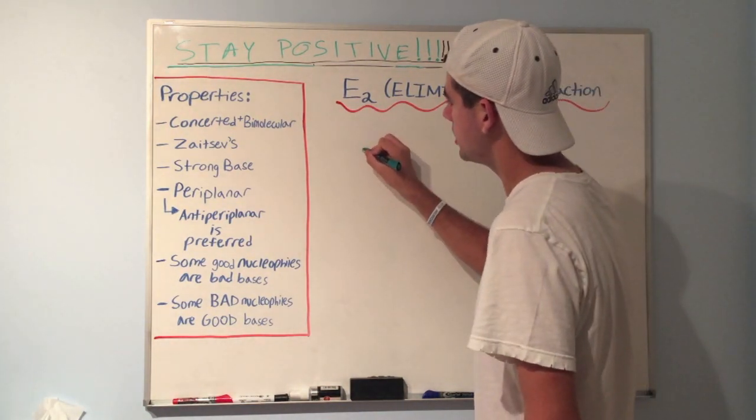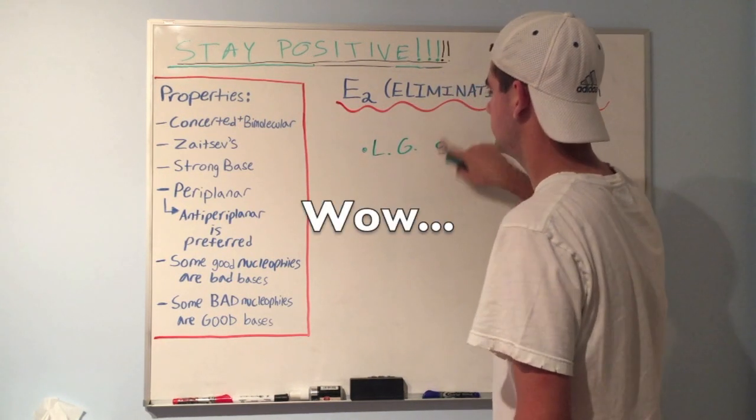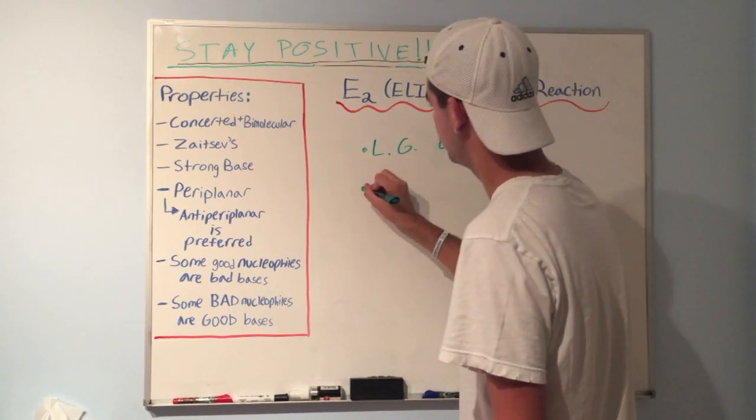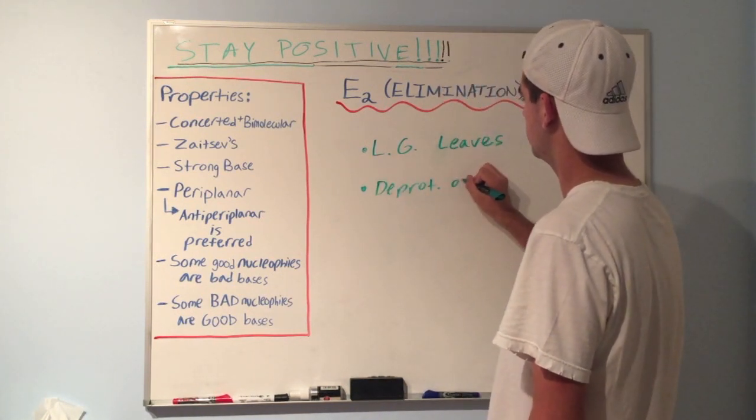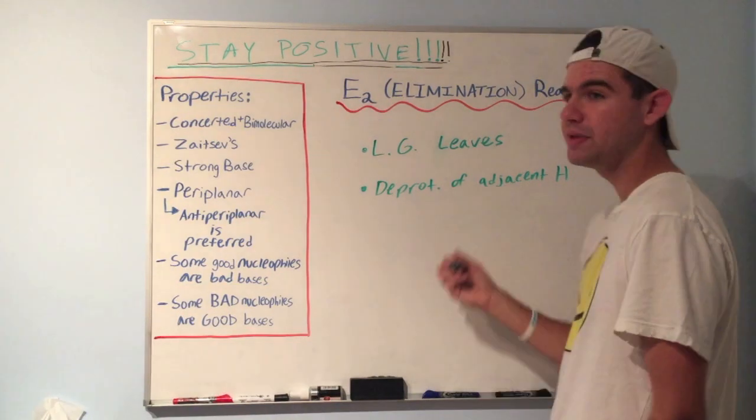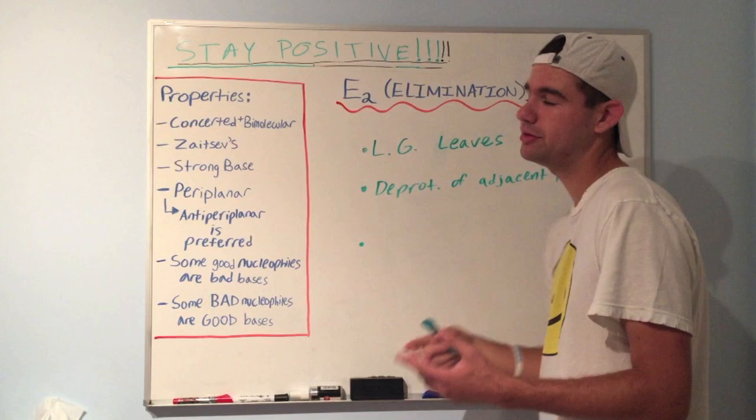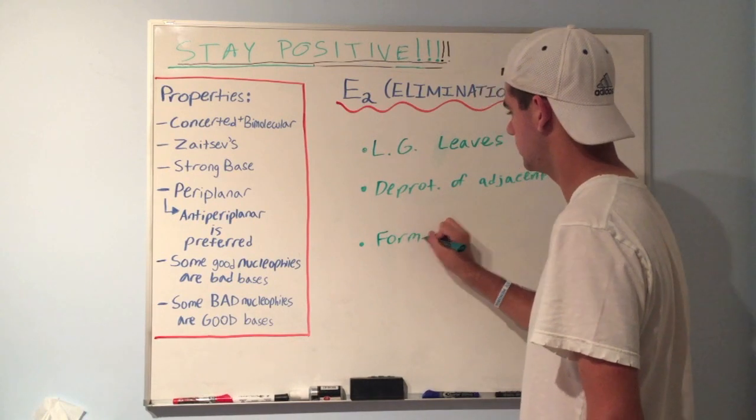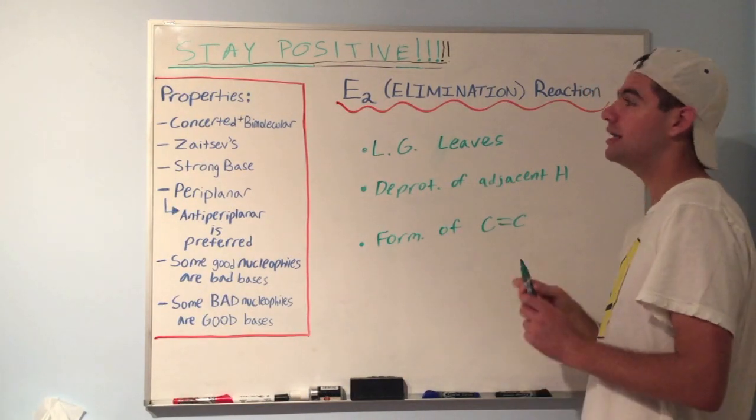Some things that happen in every E2 mechanism. Number one, leaving group leaves. Another thing that happens, deprotonation of adjacent hydrogen. And the last thing that happens, formation of carbon-carbon double bond. So these three things happen in Elimination 2.